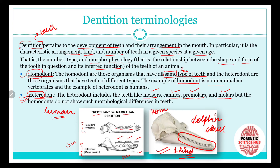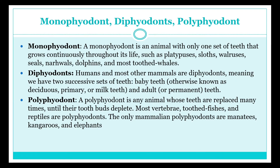Now let's move to monophyodont, diphyodont, and polyphyodont. 'Mono' means one, so a monophyodont is an animal with only one set of teeth that grows continuously throughout its life. Examples include platypus, sloth, walruses, seals, narwhals, dolphins, and most toothed whales.